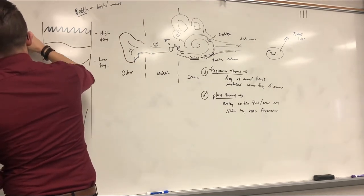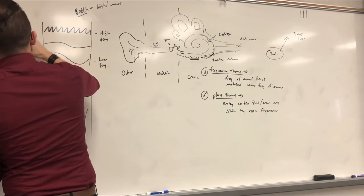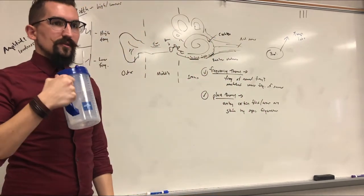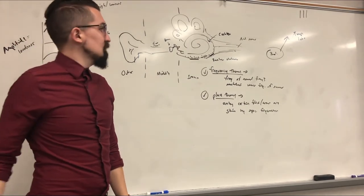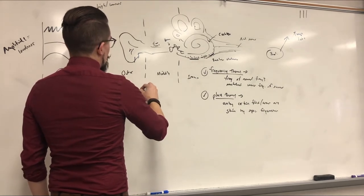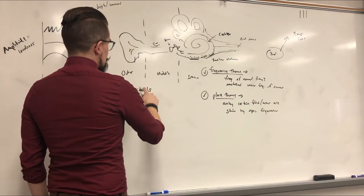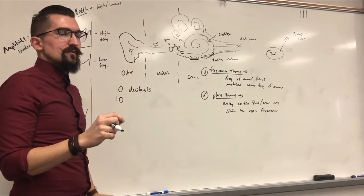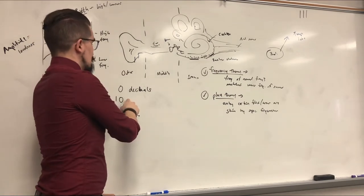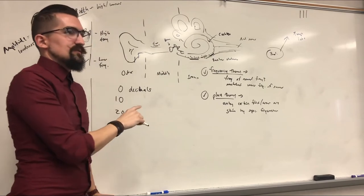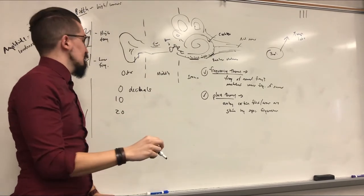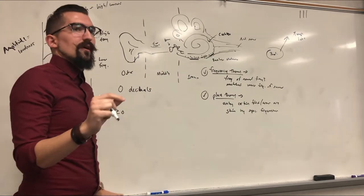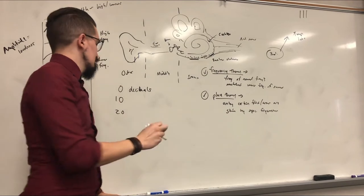Amplitude — the height of the wave peaks and valleys — equals loudness. We measure loudness in decibels. Zero decibels is essentially no sound. The scale goes up in increments of 10, and importantly it increases exponentially — so 20 decibels is actually 10 times louder than 10 decibels, and so on. The level at which you start to experience ear damage over time is 85 decibels.